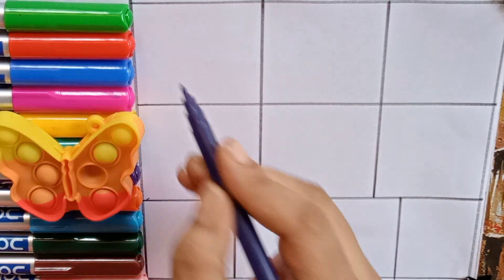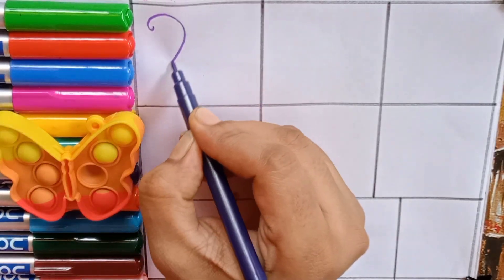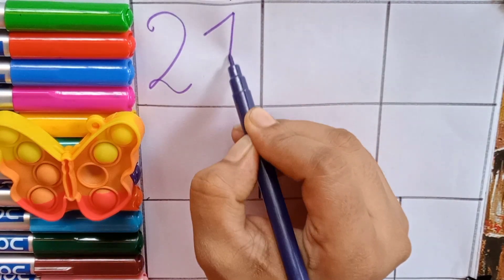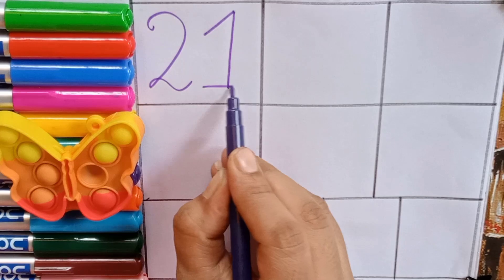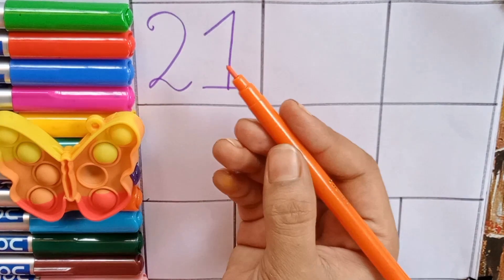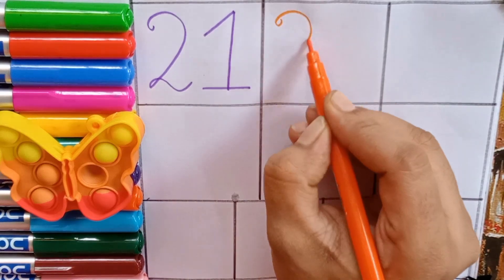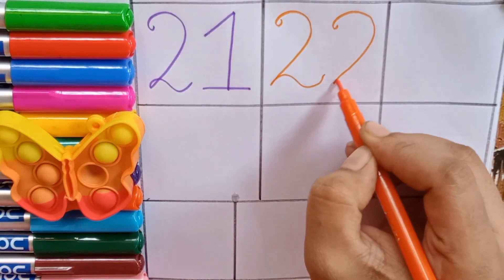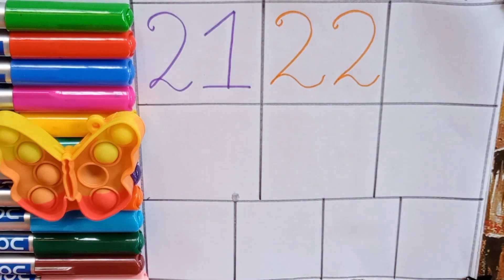Let's learn numbers. Purple, two, one, twenty-one. Orange, two, two, twenty-two. Two, two, twenty-two.